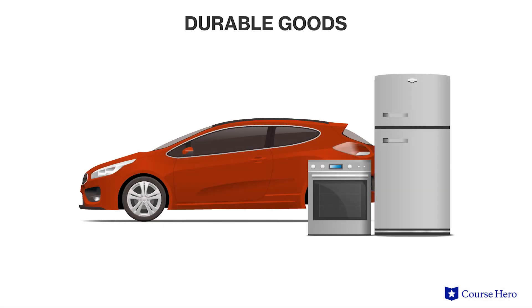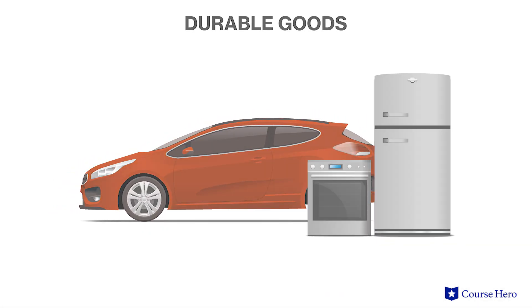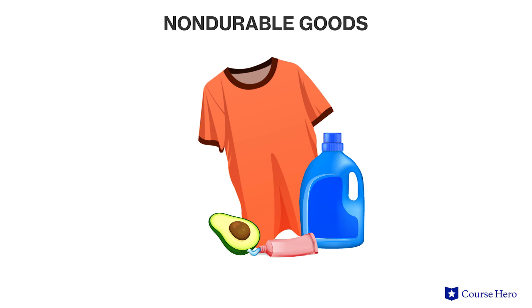Durable goods are long-lasting products such as vehicles and appliances. Non-durable goods, in contrast, are products that have a short lifespan such as food, clothes, and consumer goods such as toothpaste and laundry detergent.